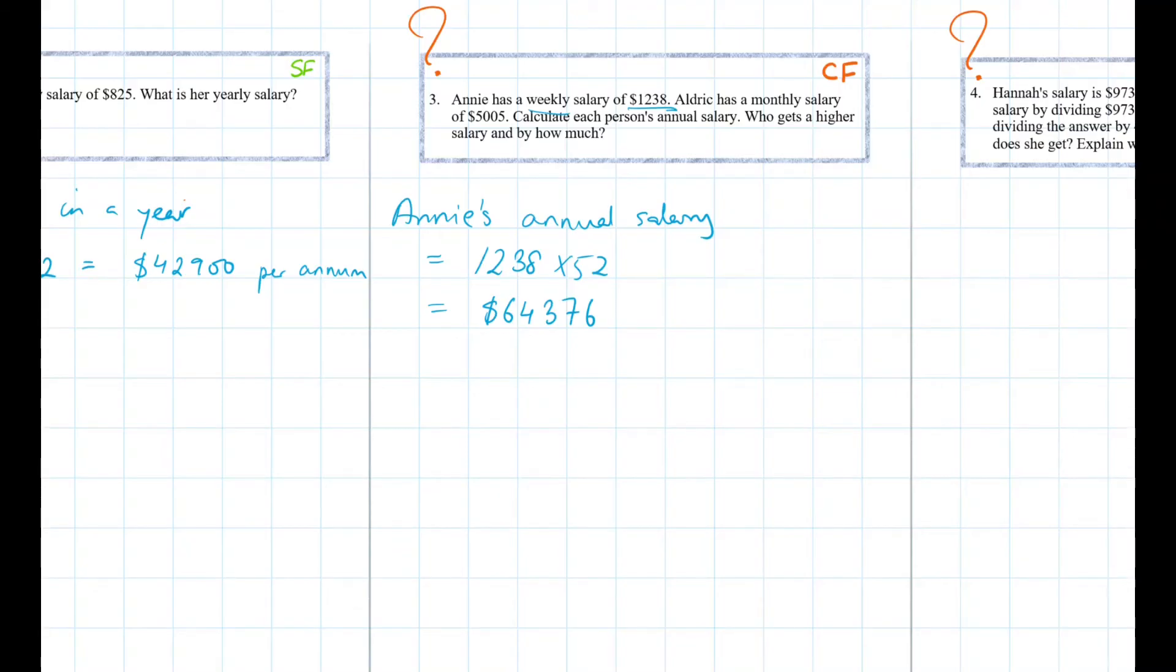Now, Aldrich is getting a monthly salary of $5,005. So to calculate Aldrich's annual salary, we need to times it by 12 as there are 12 months in a year. It's going to be $5,005 times 12. So that is $60,060.